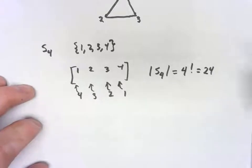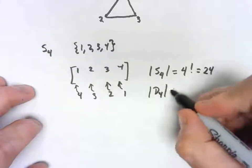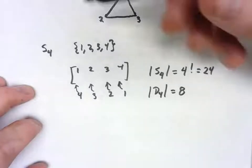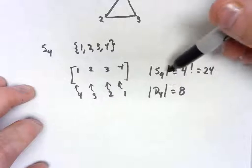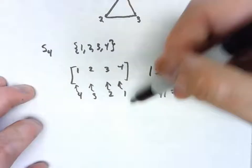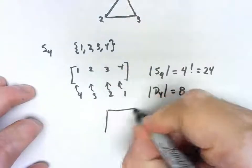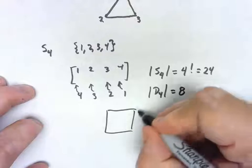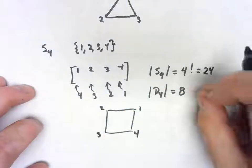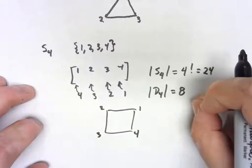And yet we know that D4 only had 8. Now every element of D4 is a permutation. Every element of D4 is some rearrangement of the elements 1, 2, 3, 4. If I remember, the point is, is that we don't get every permutation in D4.